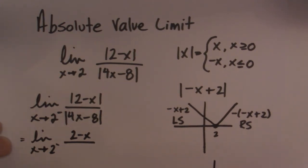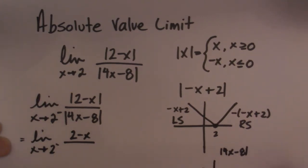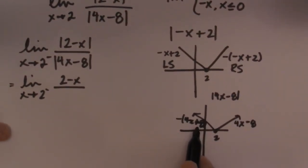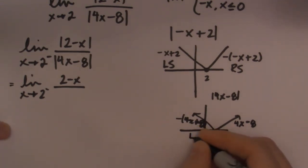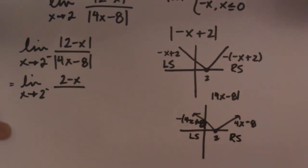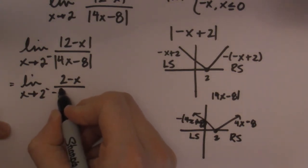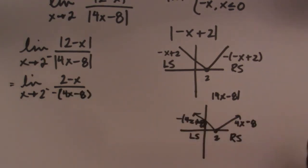Now if we look at the graph of the absolute value of 4x minus 8, this has the same x-intercept at 2, so it looks similar. If I look at my linear function, it's 4x minus 8 — this is the piece with the positive slope. So the right side is 4x minus 8, and the left side is negative 4x minus 8. So we have to make a decision about which piece we're going to choose. Since we're on the left side of 2, I'll choose negative bracket 4x minus 8.